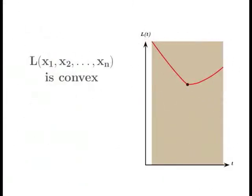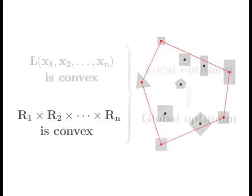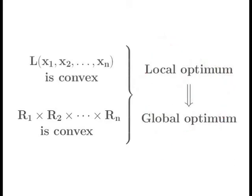Since the length function is convex, and it is defined on a convex region, we can conclude that any local optimum of the function is also a global optimum.